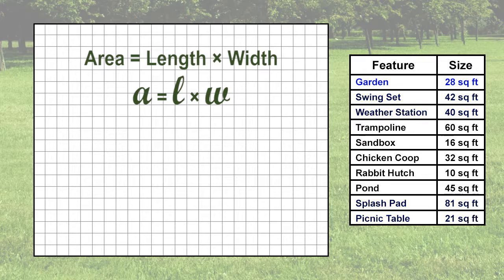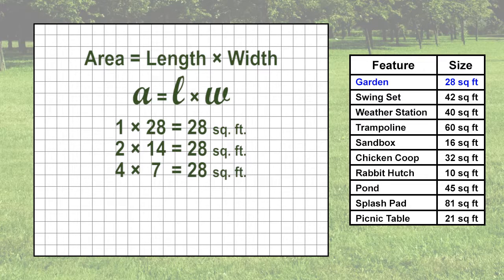Let's start with a garden that has 28 square feet. What are the factors multiplied together that will make 28 square feet? We know that 1 times 28 is 28, 2 times 14 is 28, and 4 times 7 equals 28 square feet.